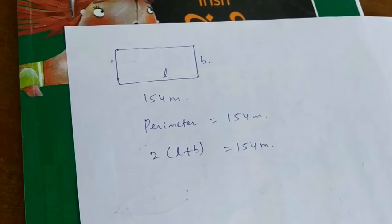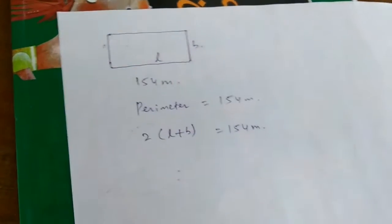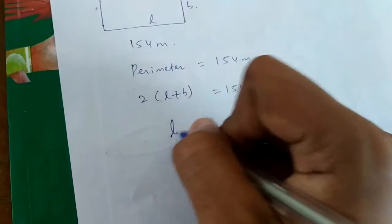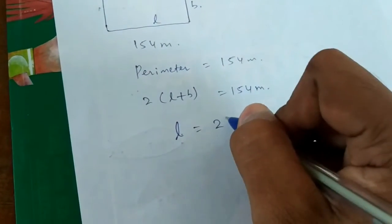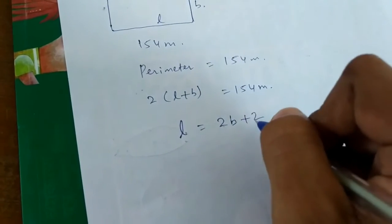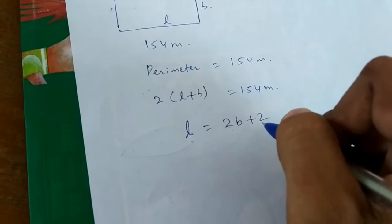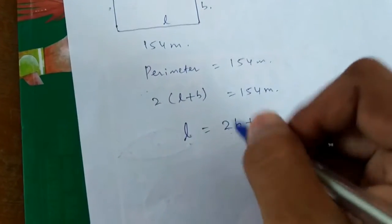Its length is 2 meters more than twice its breadth. So length is 2 into breadth plus 2, which is 2b plus 2.